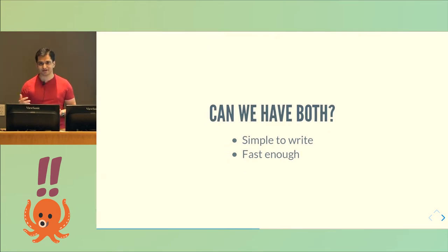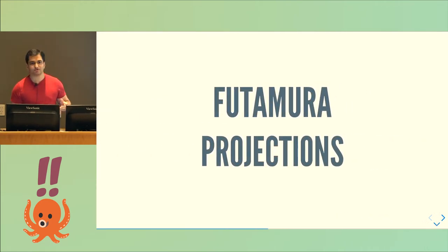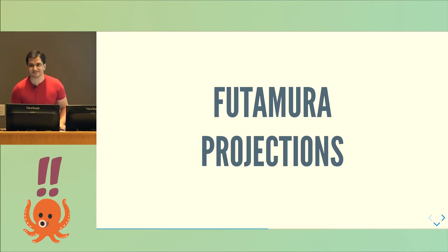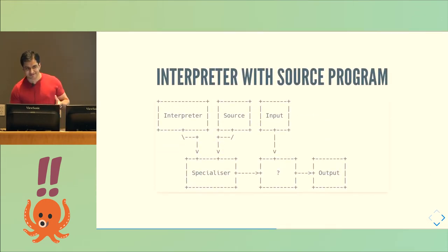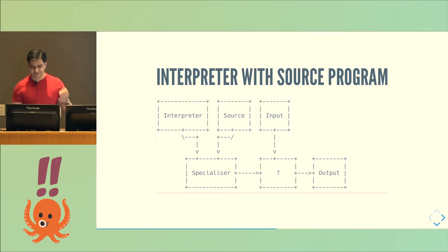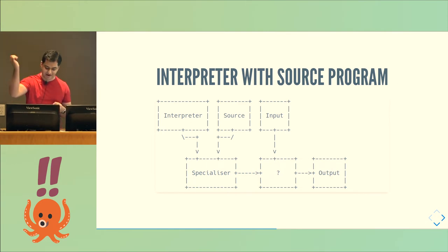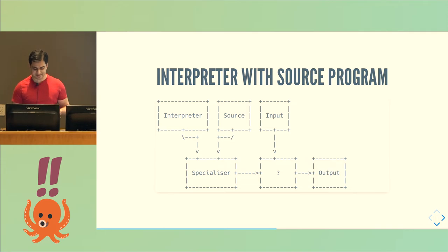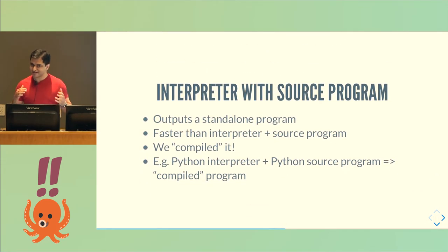Wouldn't it be nice if we could have both — something simple to write as well as fast? A researcher called Yoshiko Futamura was thinking about these things in the early 80s. He wanted to write software in BASIC, which is not the fastest interpreted language, but wanted the output to be fast like Fortran, without writing Fortran. He realized: if you take an interpreter and specialize it with respect to some source program — doing inlining, unrolling, etc. — you get a residual program that's a cut-down version of the interpreter. It only knows how to do what the source program does, takes dynamic input, produces output, and runs standalone. We've compiled it somehow without a compiler.